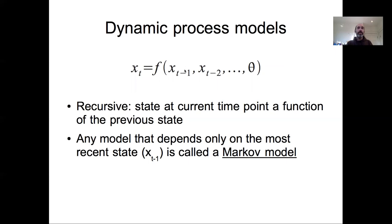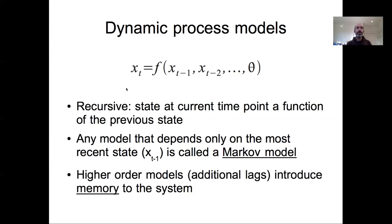A special case of dynamic process models is one that only depends on the most recent observation — the current state of the system. This is called a Markov model. The Markov property means you only need to know the current state to predict the next state; you don't need multiple lags. This is in contrast with higher-order models that have additional lags, which introduce what's called memory into the system. If you know the current state perfectly, a Markov model is memoryless — you don't need to know what came before.